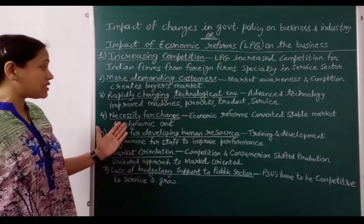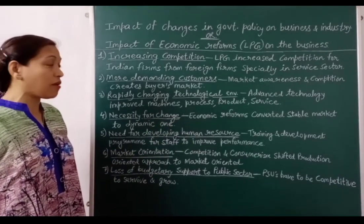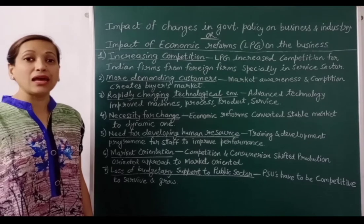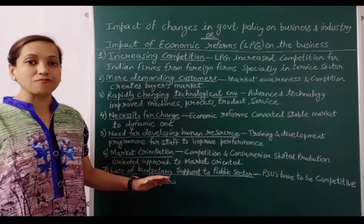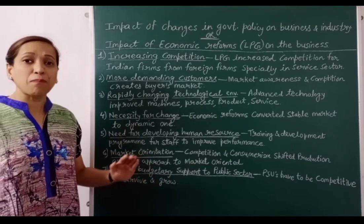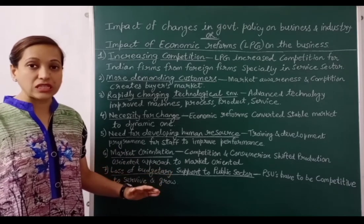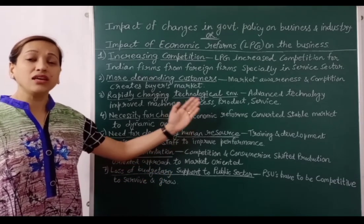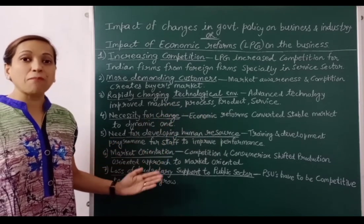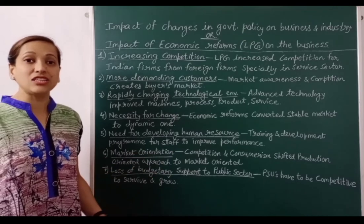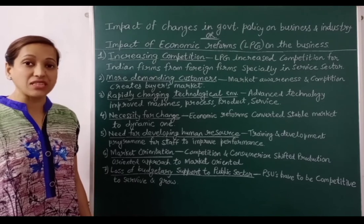The fourth impact is the necessity for change. Economic reforms converted the stable market into a dynamic one. Before economic reforms, the market environment in India was very stable — the same policy, plan, product and manufacturing process were used for the long term. But after economic reforms, the stable market converted into a dynamic market. For example, companies like LG, Samsung and Bajaj keep on changing their products for this competitive market.